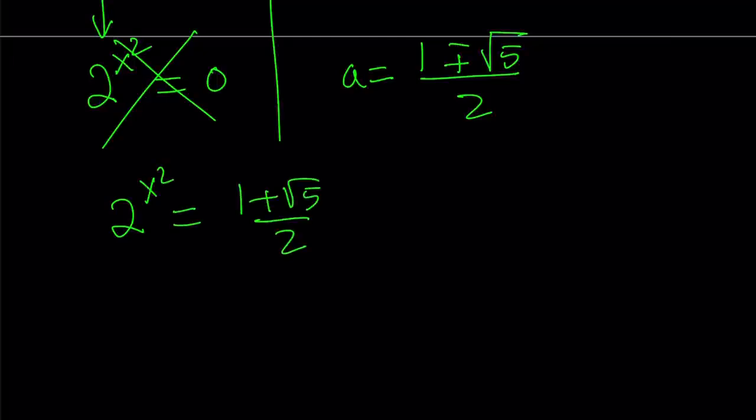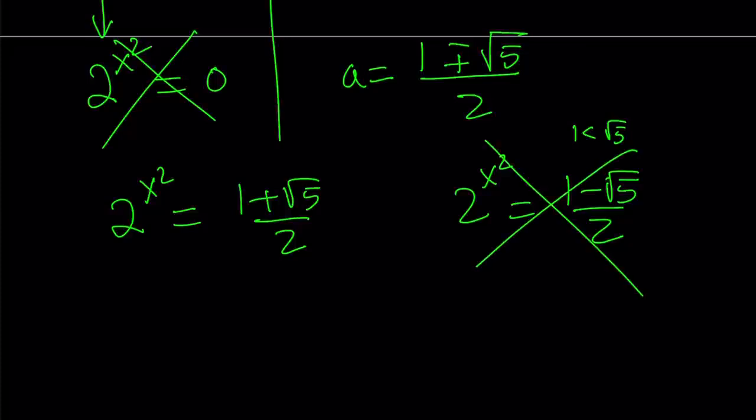From here, we should get a solution, but the other one is 2 to the power of x squared equals 1 minus root 5 over 2. But guess what? Root 5 is greater than 1, or 1 is less than root 5. Therefore, 1 minus root 5 is negative. This is negative, but 2 to the power of x squared cannot be negative unless x is a complex number. Can we find some complex solutions from here? Probably. But let's go ahead and focus on the other equation now.